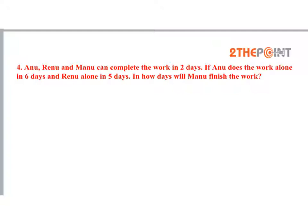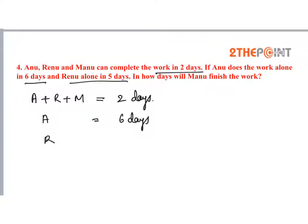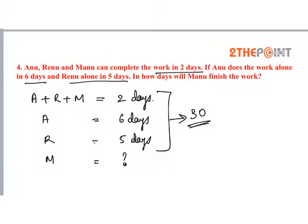Anu, Renu, and Manu can complete the work in 2 days. If Anu does the work alone in 6 days and Renu alone in 5 days, in how many days will Manu finish the work? The total work is the LCM of 2, 6, and 5, which is 30 units. Work done all together by Anu, Renu, and Manu is 30 by 2, which is 15 units per day.